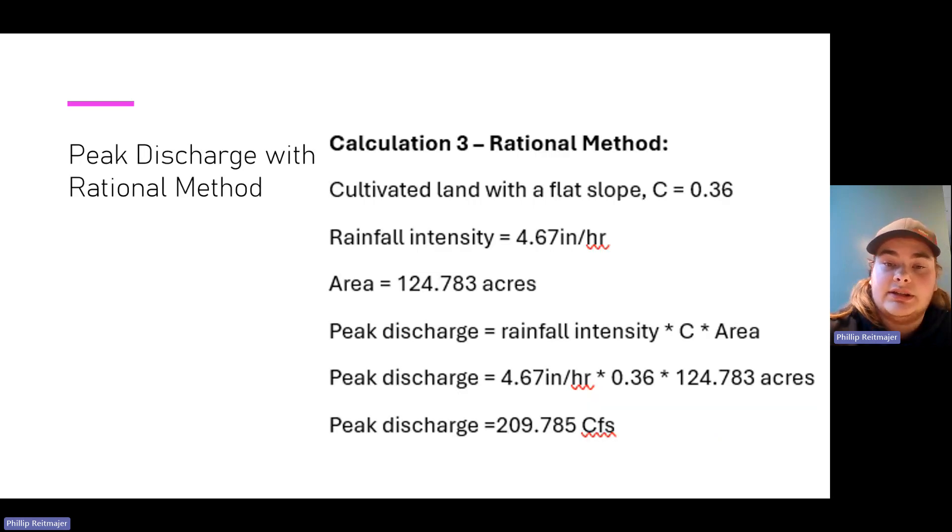Then using the C value, the rainfall intensity and area all found in the project, we multiply them all together to get peak discharge of 209.785 cubic feet per second.